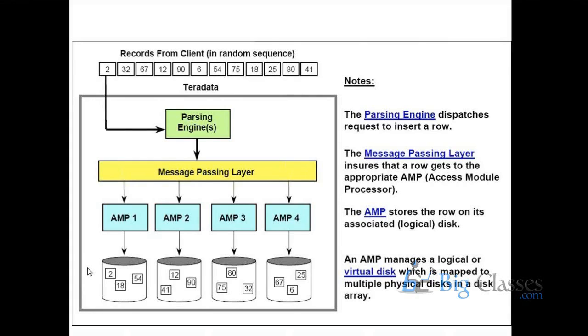So some of the clients, some of the biggest clients like Walmart, Walmart is having around 900 nodes and they are having around 9000 AMPs like that. 900 nodes and 9000 AMPs.